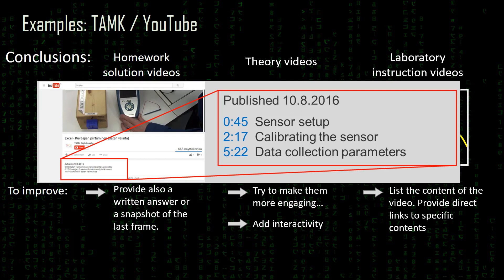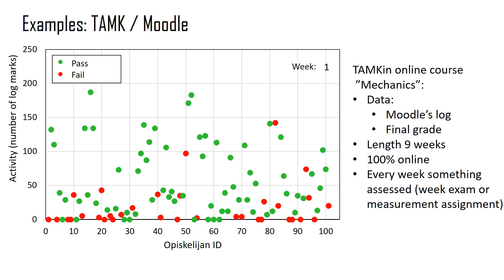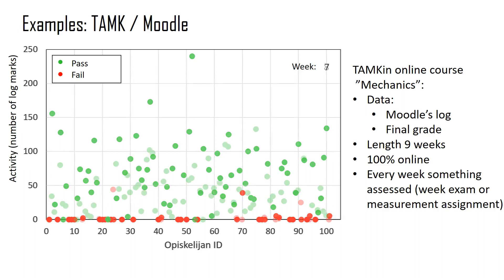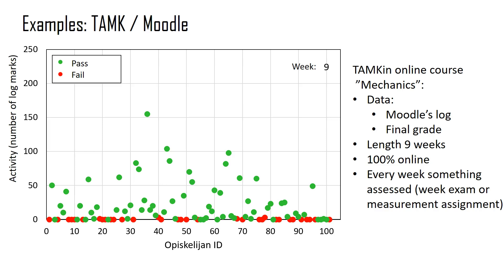Another view: on the y-axis is the overall activity of a student, and the student ID is on the x-axis for one of my physics courses. I used Moodle's log file to get this data. The course is fully online and lasts nine weeks. Green dots are for students who finally got a passing grade, and red dots are for those who got a failing grade. From week one onwards, we can see how students' activity changes, and from week six forwards, all students who finally got a failing grade already have very low activity.